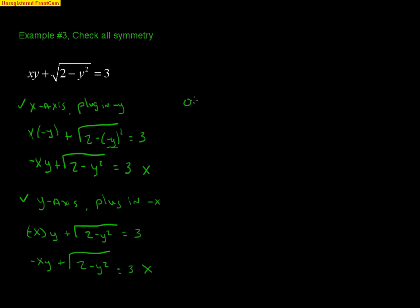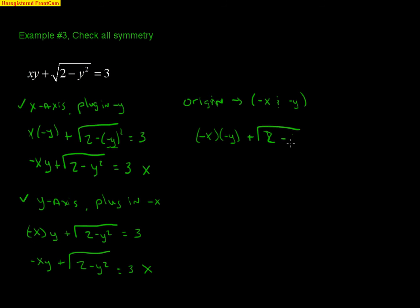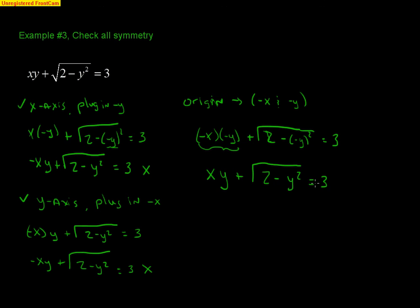The last thing to check is the origin, which means plug in both negative x and negative y. We get (−x)(−y) + √(2 − (−y)²) = 3. Two negatives multiplied give a positive: xy + √(2 − y²) = 3. That is the same as the original, so this equation is symmetric to the origin.